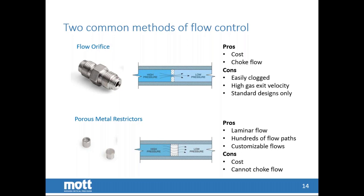The advantages of an orifice are that the cost is typically a little bit lower, and you do achieve choke flow, meaning you can only flow up to a certain amount based on the geometry. The downside is you only have one hole, so it is more likely to be clogged. You have a very high gas exit velocity, which can create turbulence in some applications, and they're very standard designs. With porous metal, there is laminar flow. You have many hundreds, if not thousands, of flow paths, so clogging becomes less of an issue. With an orifice, the accuracy is dependent on the tolerance of the hole that you drill, whereas the flow restrictors that we make are each tuned and calibrated to the specific pressure and flow conditions required in the application.